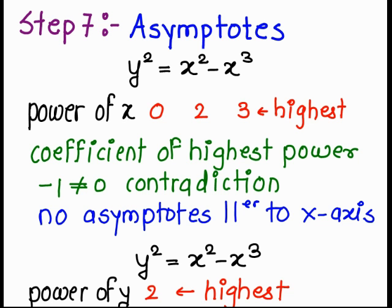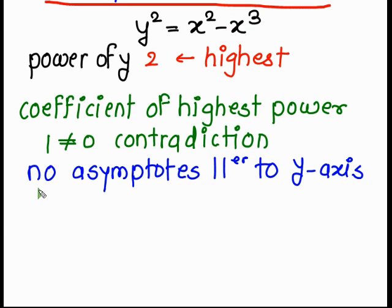In step number 7, we need to check the asymptote parallel to x-axis. So there is no any asymptote parallel to x-axis and there is no any asymptote parallel to y-axis. So this much information we have from all the steps.